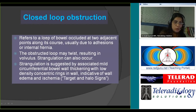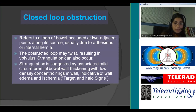Closed-loop obstruction is when a loop of bowel is occluded at two different points along its course, usually due to adhesions or an internal hernia. This obstructed loop could twist, resulting in volvulus, with increased obstruction and interruption of blood supply, resulting in strangulation. You can identify strangulation on CT by looking for bowel wall thickening and concentric rings on the bowel wall indicating wall edema and ischemia — described as the target and halo signs.